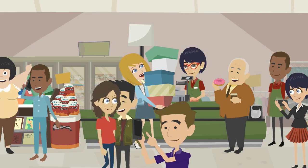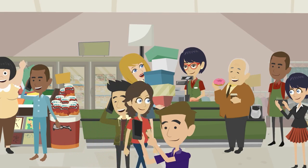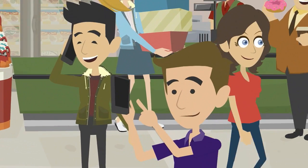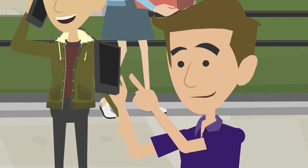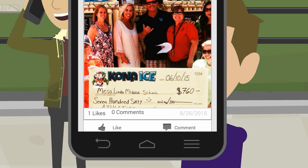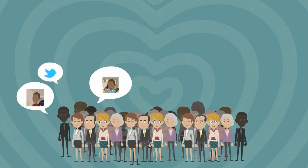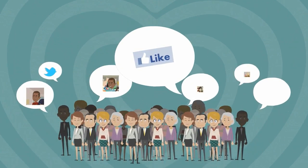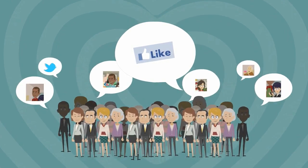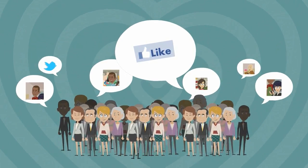When members attend Bob's event, they can comment on and like each other's posts in the Members Only community feed and spread the word to their friends, reaching twice the audience that Bob could reach on his own.